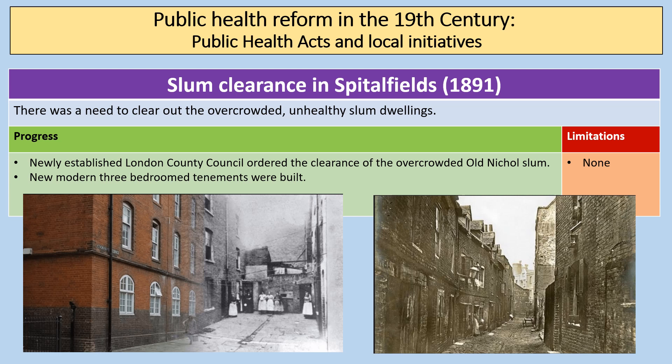Towards the end of the 19th century there was huge slum clearance. The newly established London County Council ordered the clearance of the overcrowded Old Nichol slum and other slums across London. New modern three-bedroom tenements were built — not all perfect, but a significant improvement. Images of the period show the contrast between the old housing and some of the new types, as well as just how cramped and badly built the old Nichol slum homes were.